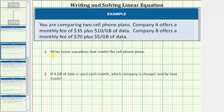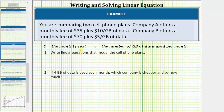Number one: write linear equations that model these cell phone plans. Before we do this, we need to define variables to represent the unknowns. We have two unknowns — we don't know the monthly cost or number of gigabytes used per month. Let's let C equal the monthly cost and x equal the number of gigabytes of data used per month. Now that we've defined the variables, we can write the linear equations that model the two cell phone plans.